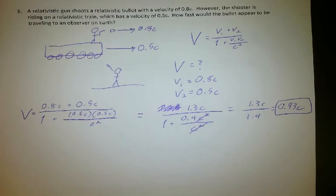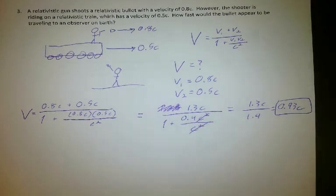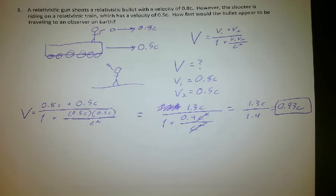And there's my answer. How fast would the person on Earth see the bullet going? The person on Earth would see the bullet traveling at 0.93c. And that's not just how fast it would look to them — that's how fast they would actually physically measure it to be if they were using a radar gun or a speedometer or something like that.